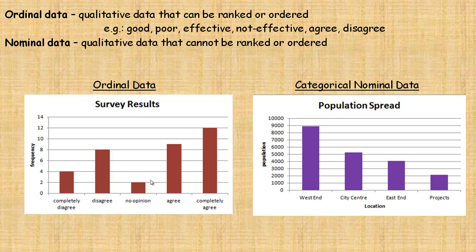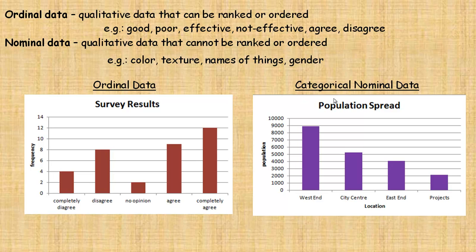Qualitative data can also be nominal — that's data that cannot be ranked or ordered. For example, the color of something, its texture, names of things, gender. Here's an example of categorical nominal data: where people live in a city. In this example, they could live in the west end, the city center, east end, or northern projects. What we're interested in is their location. While it's true it's showing how many, which seems numerical, the main point is just where they actually live — their location — and that's why we would consider it to be nominal data.